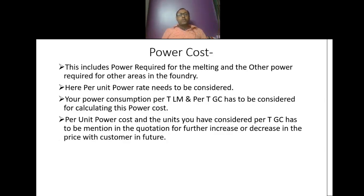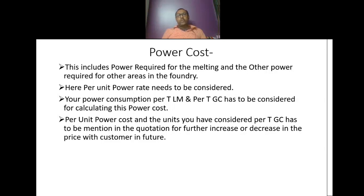Now we go to power cost. This includes power requirement for melting and other areas in the foundry like molding, sand plant, core shop, fettling, etc. Per unit power cost rate needs to be considered and mentioned in the quotation. Your power consumption per ton of liquid metal and per ton of good casting has to be considered. The power rate per unit and units consumed per ton of good casting must be mentioned in the quotation for future price correction discussions with the customer.